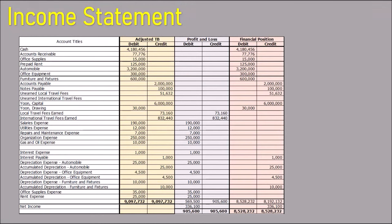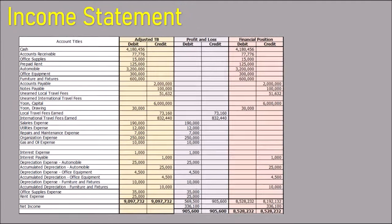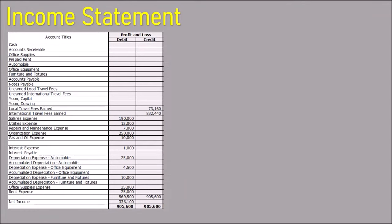To prepare the income statement, we use the profit or loss section of the worksheet. The credit side of the profit and loss column contains our revenues — for Landing On You Travel Services Company, that's local travel fees earned and international travel fees earned. The debit side contains all expenses for the period: salaries, utilities, repairs and maintenance, organization, gas and oil, interest, depreciation of assets, office supplies, and rent.